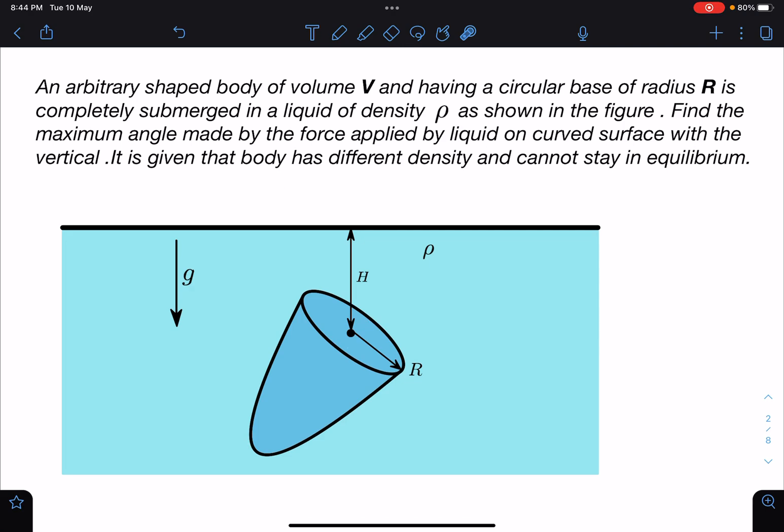An arbitrary shaped body of volume V and having a circular base of radius R is completely submerged in a liquid of density ρ as shown in the figure. Find the maximum angle made by the force applied by liquid on the curved surface. Please see in this surface, this curved part, whatever is the net force, we have to find its maximum deflection from the vertical.